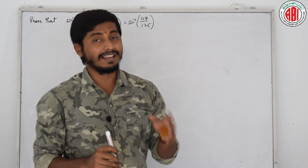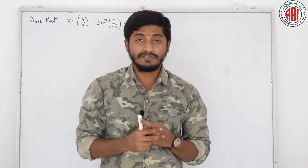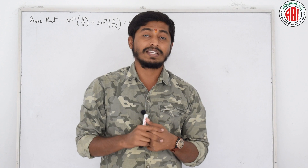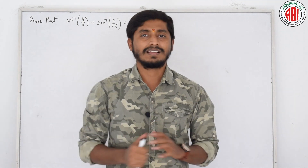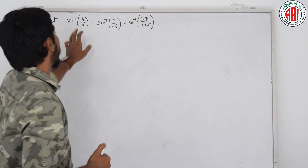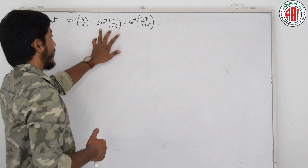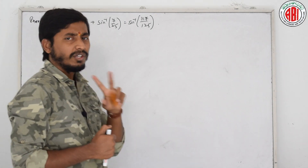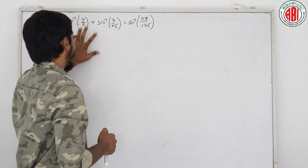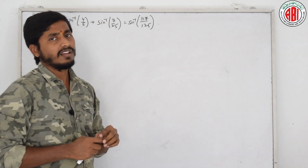The formulas we have seen in the last session are: sin inverse x plus sin inverse y, cos inverse plus cos inverse y, and tan inverse plus tan inverse y. That is the basic principle to solve today's session. The question given here asks us to prove sin inverse 4 by 5 plus sin inverse 7 by 25 is equal to sin inverse 117 by 125. We can do this in two different ways — either by assuming these as A and B, or by directly substituting in the formula.